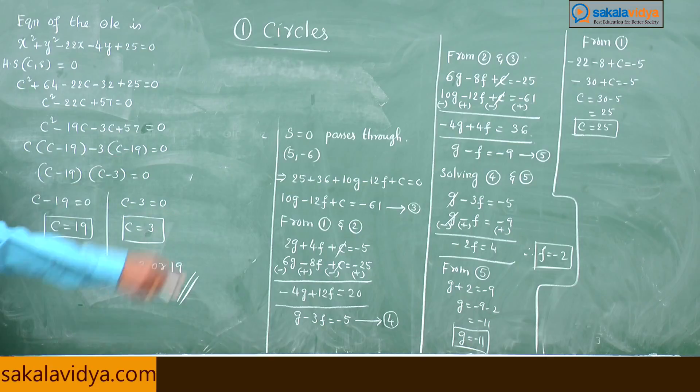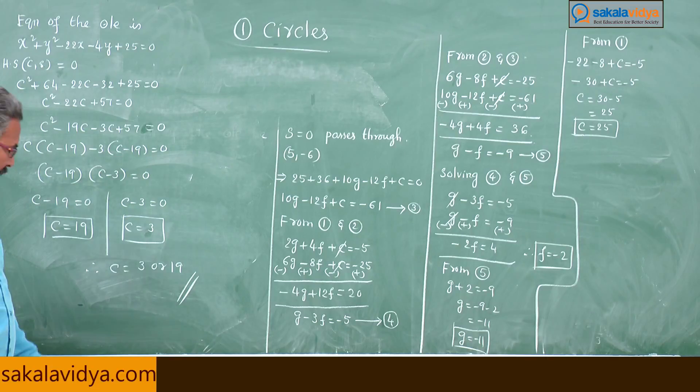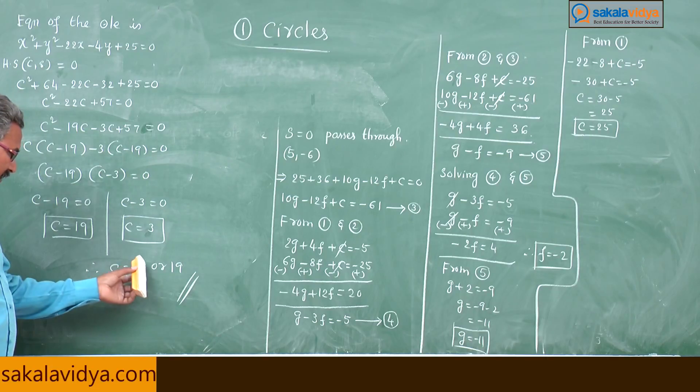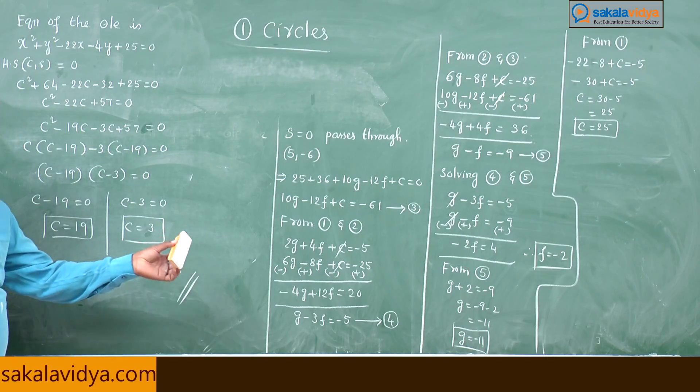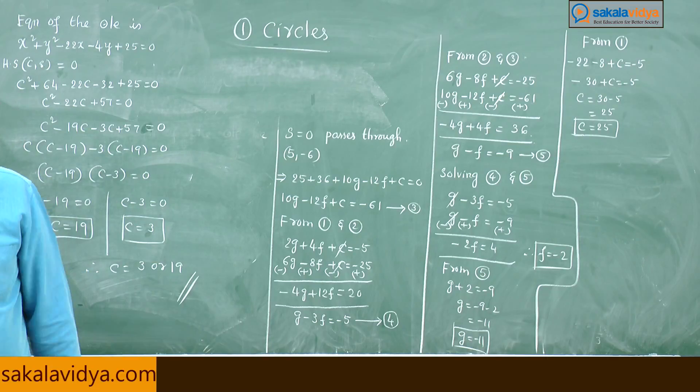If the given four points are concyclic, we get C = 3 or C = 19.